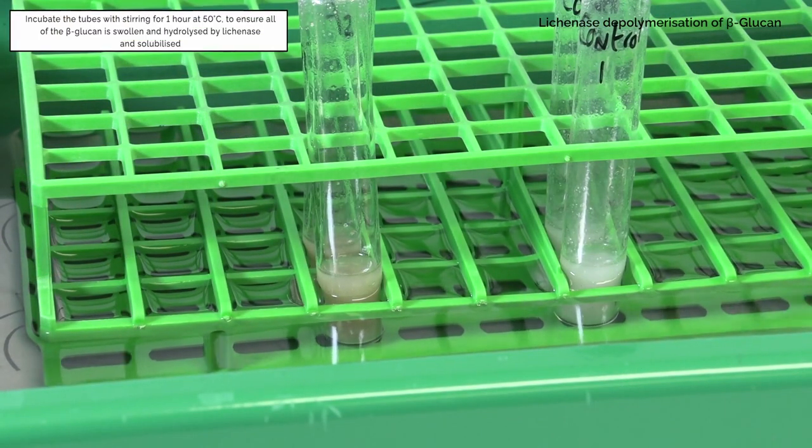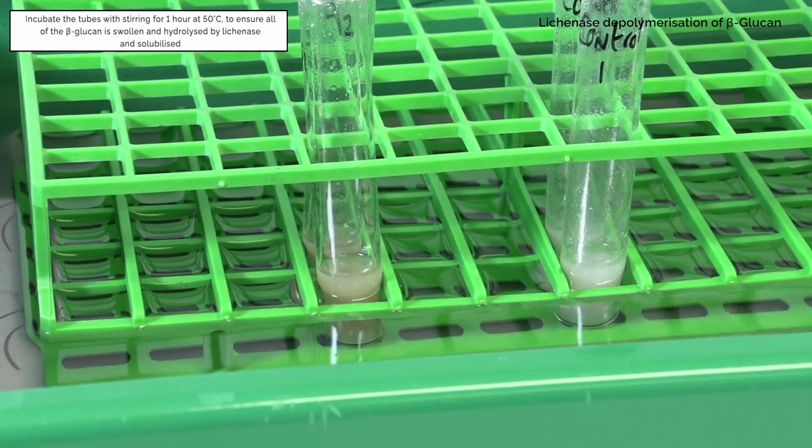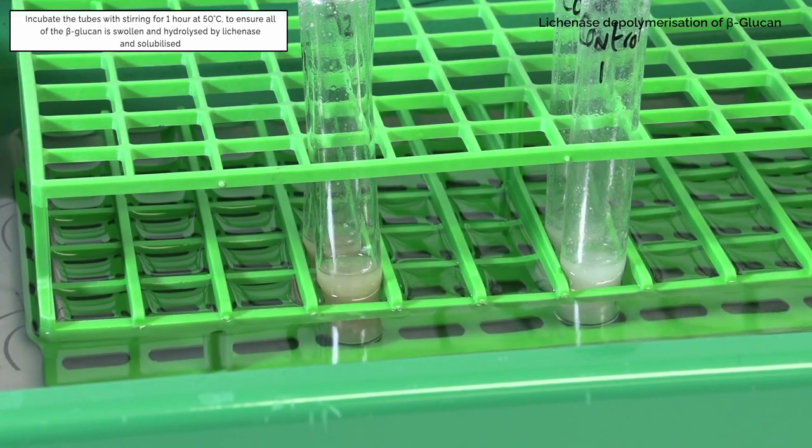Incubate the tubes with stirring for 1 hour at 50 degrees Celsius to ensure all of the beta-glucan is swollen and hydrolyzed by lichenase and solubilized.